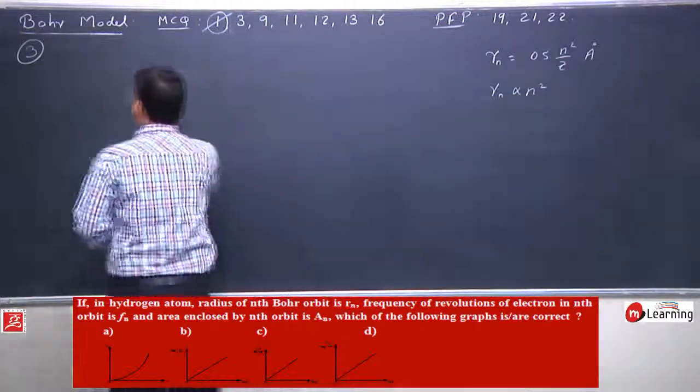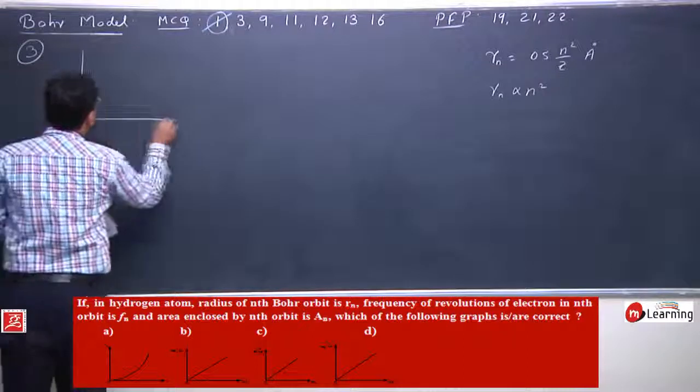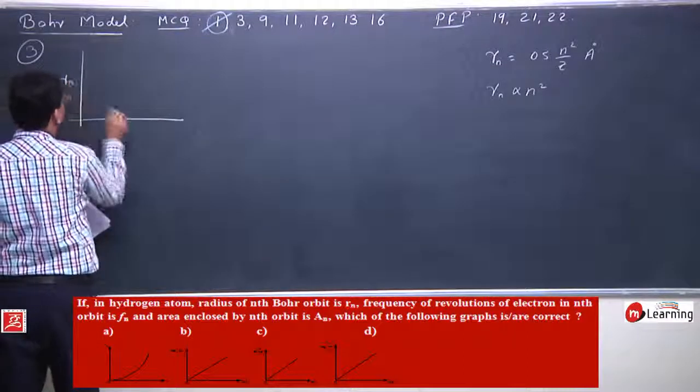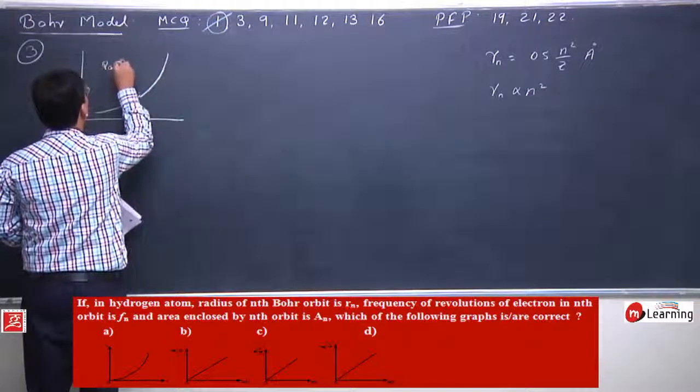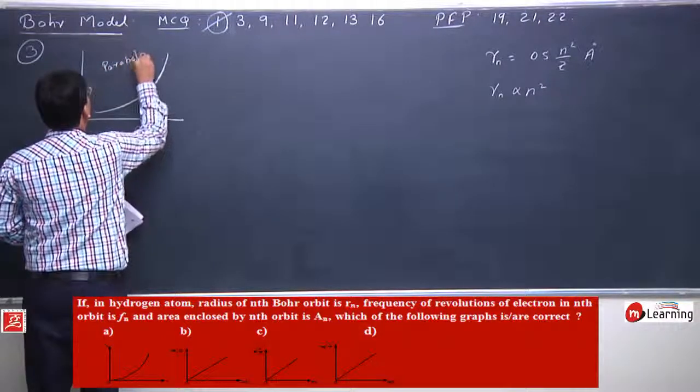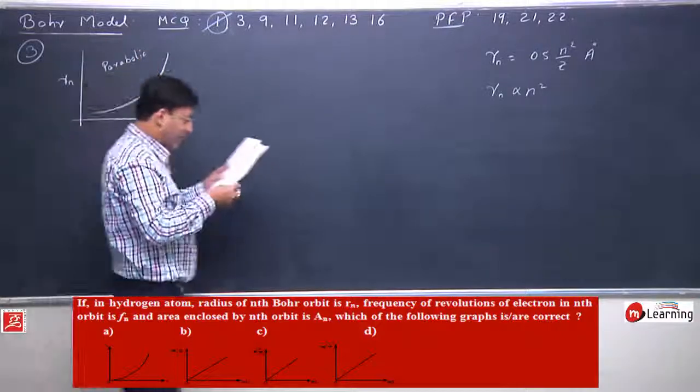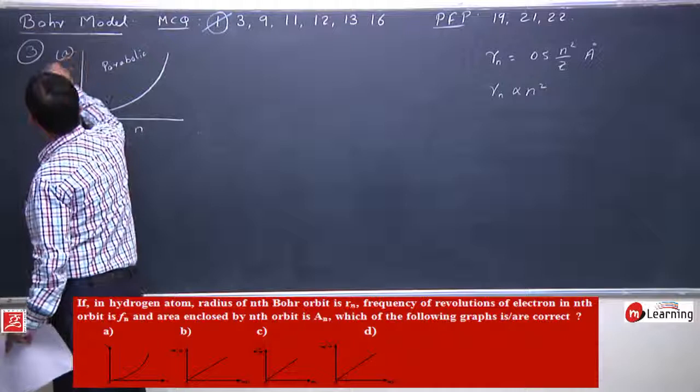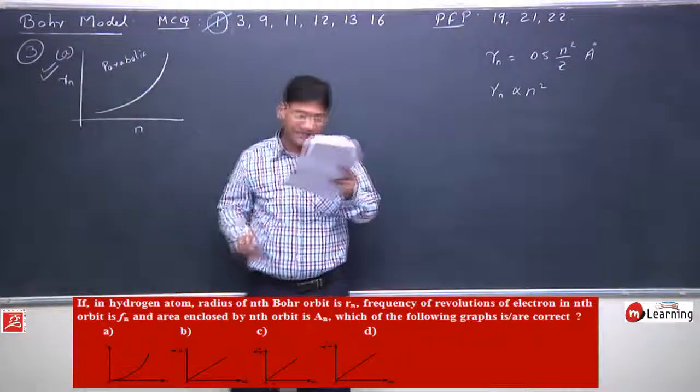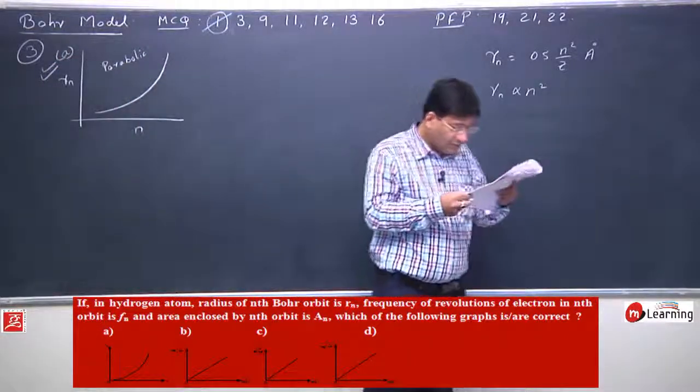So radius versus n when we plot, radius of nth orbit versus n, if we plot the radius of nth orbit versus n.